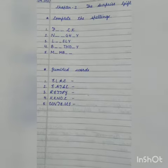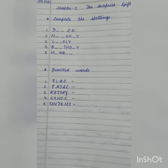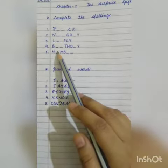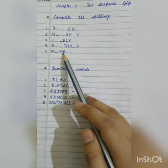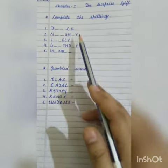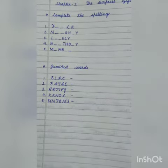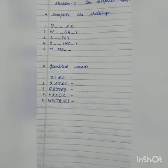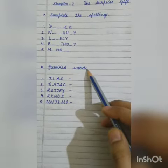M dash M dash M B dash dash dash. These words we have written in new words also, and we have read them in the chapter. So we have to learn the spellings. Next is jumbled words.